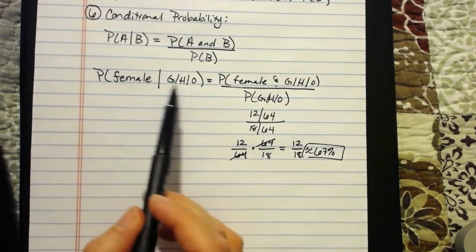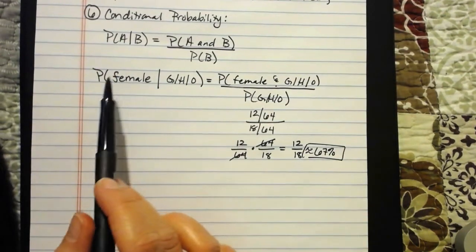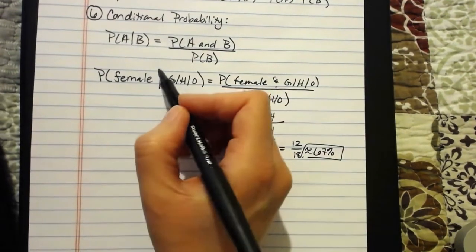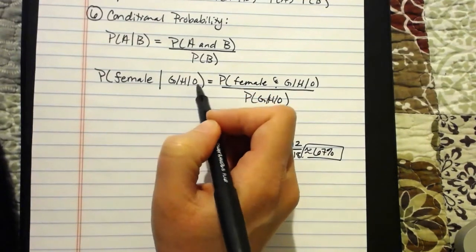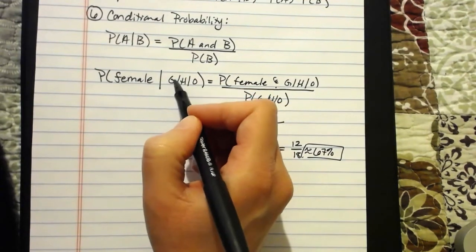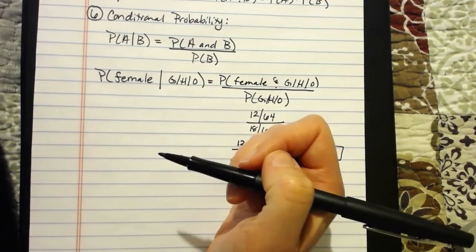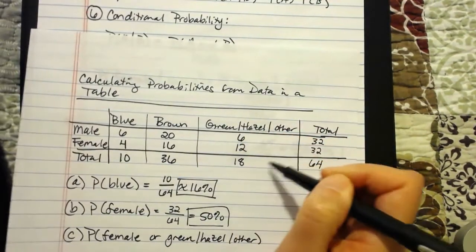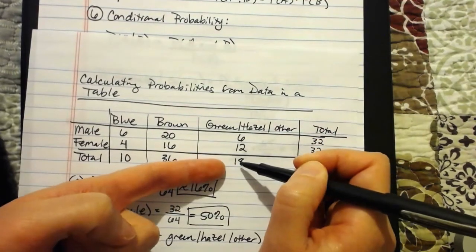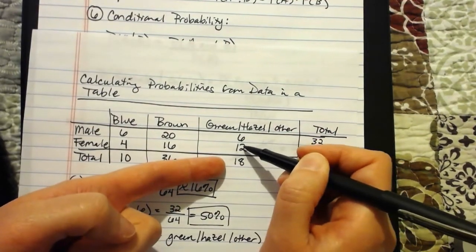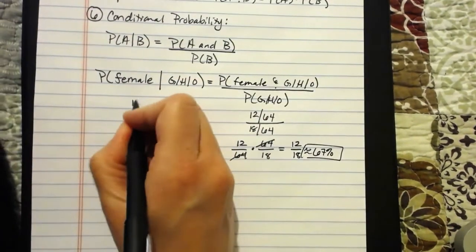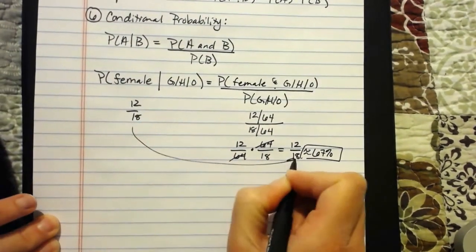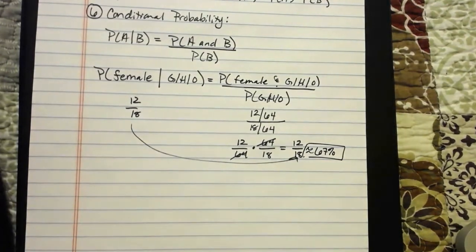That's the way to calculate conditional probability using the formula, but it's almost easiest to just pull this off the table. The shortcut: whatever comes after the given bar, we're only looking at that part of the table. So out of green/hazel/other — out of 18 — what's the probability of a female? 12 out of 18. Exact same thing we got using the formula, but much faster using the shortcut.